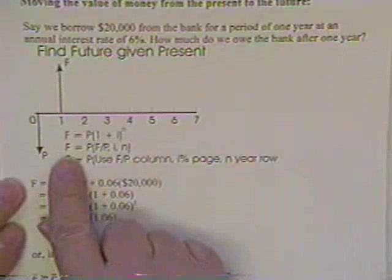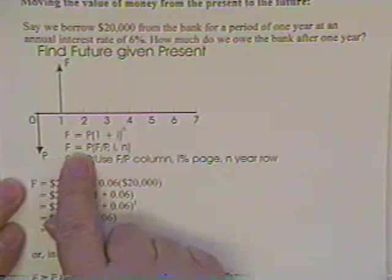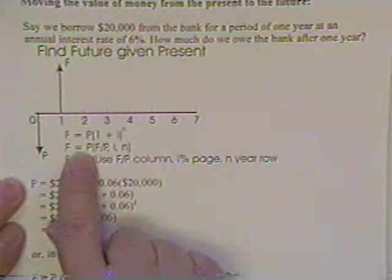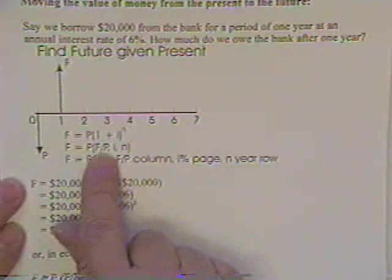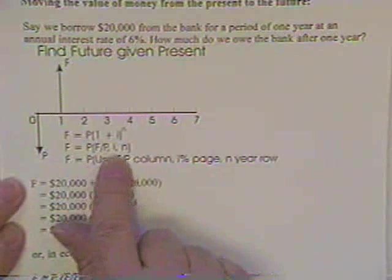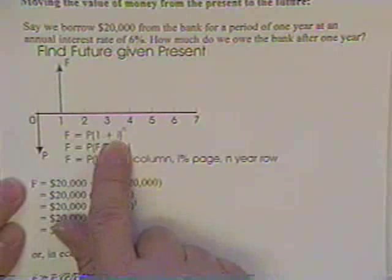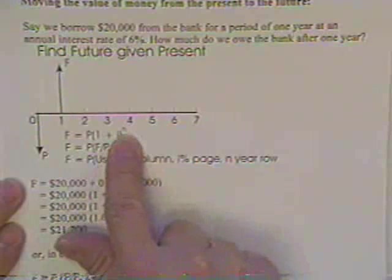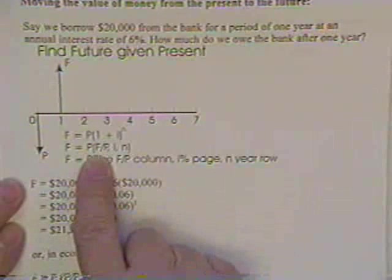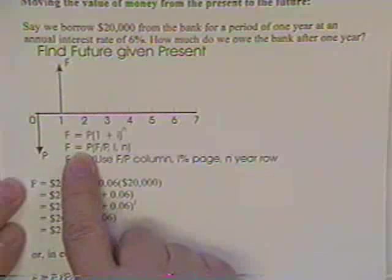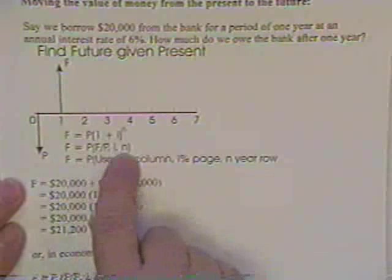Now, a very nifty way to write this down, which allows you to use interest tables, is to say that the future value of the money is equal to the present value of the money multiplied times a factor, and the factor is called F over P comma I comma N. And what it really represents is nothing more than 1 plus the interest rate per year raised to the number of years that you are going to borrow the money. So what this says is that the future value is equal to the present value of the money borrowed times a factor which can be found in some tables.